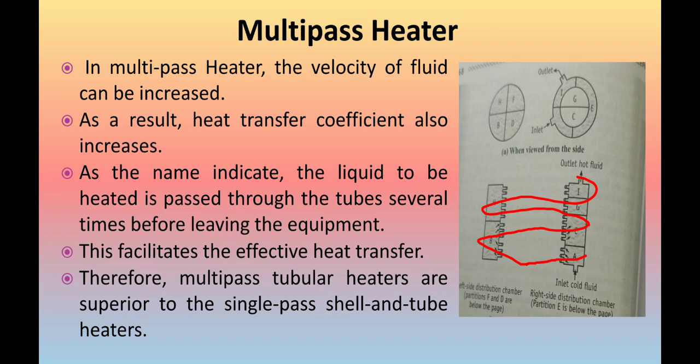In order to facilitate this process, the distribution chambers are partitioned by means of baffles. Baffles are basically circular disk-type metal pieces which increase the velocity of the fluid and cause turbulence, thereby increasing the heat transfer coefficient.